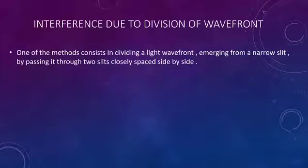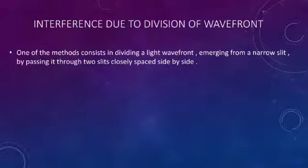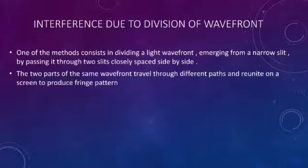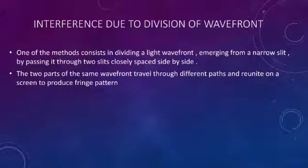One of the methods consists of dividing a light wavefront emerging from a narrow slit by passing it through two slits closely spaced side by side. The two parts of the same wavefront travel through different paths and reunite on a screen to produce a fringe pattern.